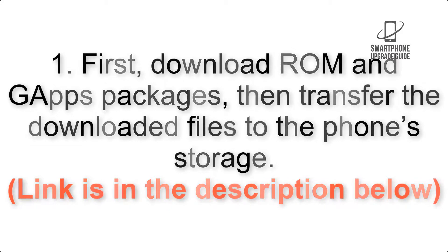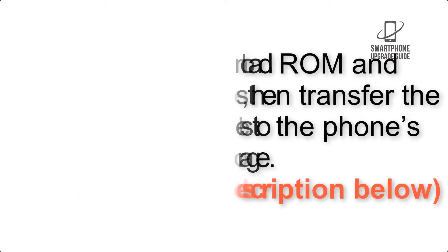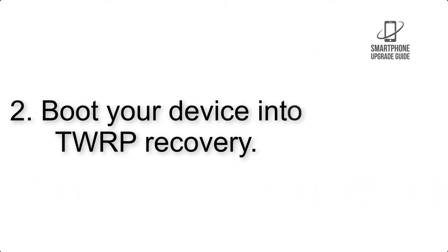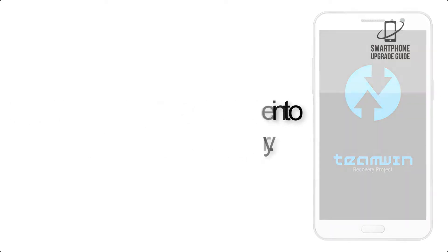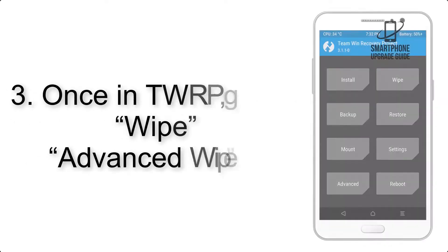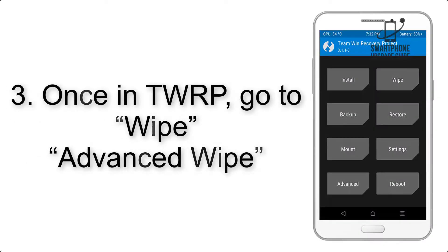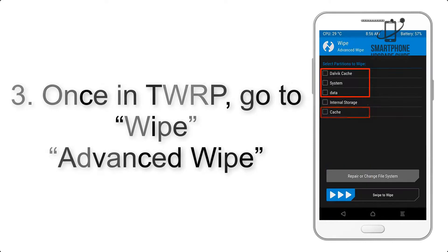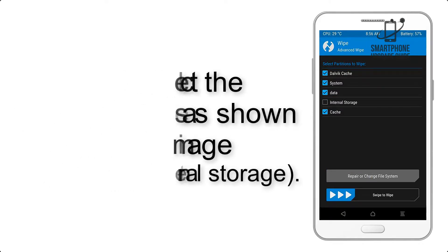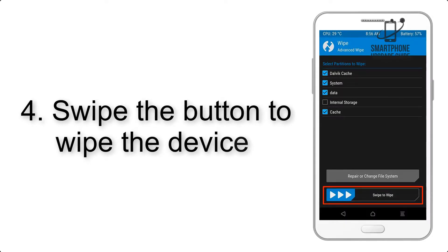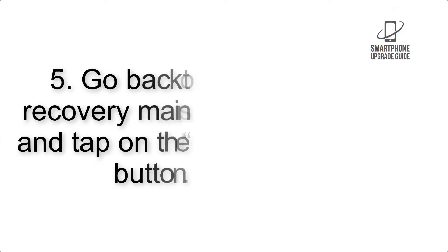Step 2: Boot your device into TWRP recovery. Once in TWRP, click on Wipe, then Advanced Wipe, and select the checkboxes as shown in the image, excluding internal storage. Step 4: Swipe the button to wipe the device.